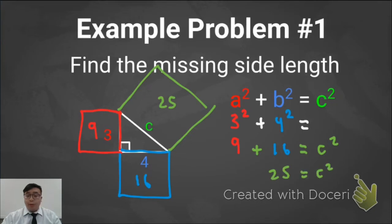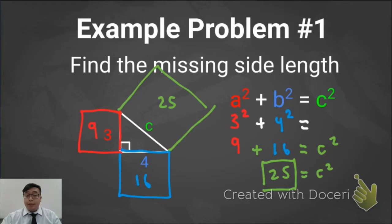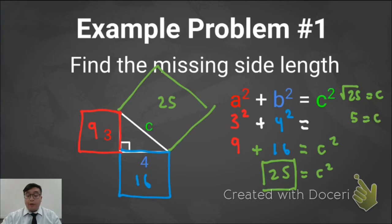But I'm not quite done yet, because I don't want to find the area of C squared — I want to find the missing side length. So I need to ask myself: what number times itself gives me an area of 25? Or, what is the square root of 25? In this case, 5 times 5 is 25, so the missing side length is 5.